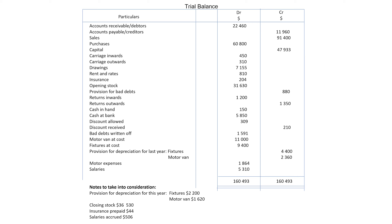Accounts receivable or debtors — asset. Accounts payable or creditors — liability. Sales — income. Purchases — expense.